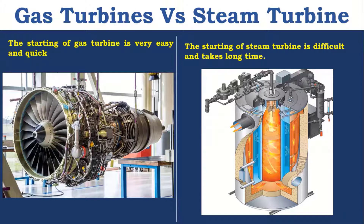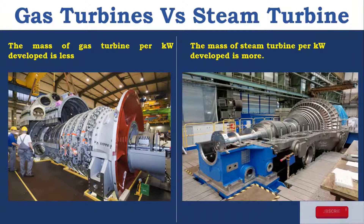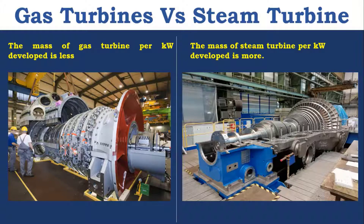When you switch on the Boiler, it takes a long time to generate steam due to initial heating for 20 to 30 minutes. The mass of Gas Turbine per kilowatt developed is less, whereas the mass of Steam Turbine per kilowatt developed is more. Boiler is one of the reasons for the weight of Steam Turbine, because Steam Turbine operates under high pressure compared to Gas Turbine.